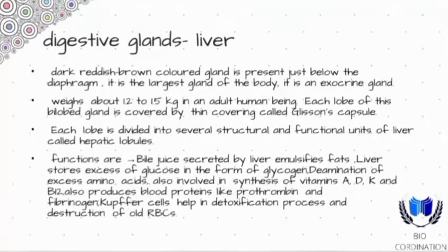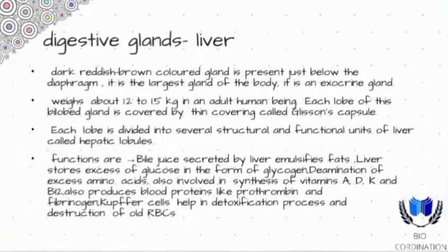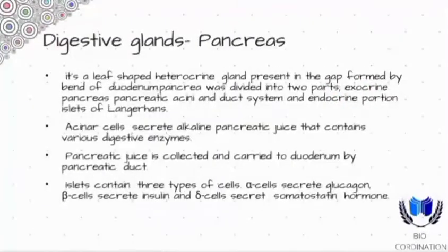Next is the pancreas, another digestive gland. The pancreas is leaf-shaped and it is a heterocrine gland, also called a mixed gland, meaning it functions as both an exocrine and an endocrine gland.